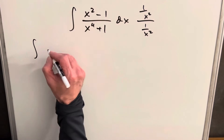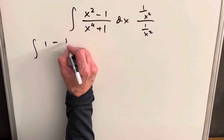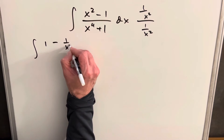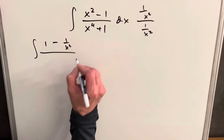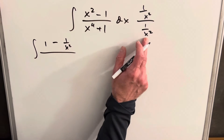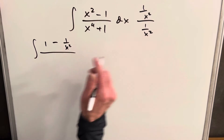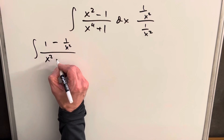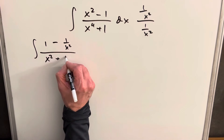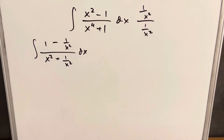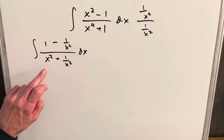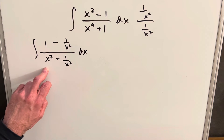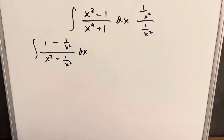Multiplying by 1/x², the numerator becomes 1 minus 1 over x squared. Then multiplying into the denominator, the first term is going to be x squared plus 1 over x squared.